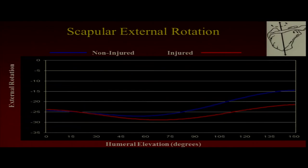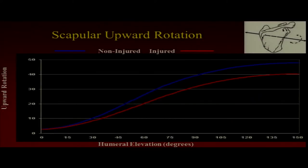This is a study we did when we looked at throwing athletes with labral tears and instability. In the injured group compared to the non-injured group, the injured group has less external rotation and more internal rotation. At ranges of motion above 90 degrees, where this is important, they also had less upward rotation. So the patients we see with these injuries have exactly the extra compressive forces that were modeled in the studies. Therefore, we've got to pay attention to this.